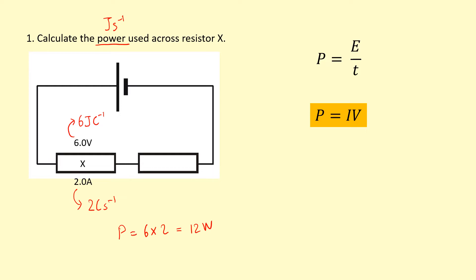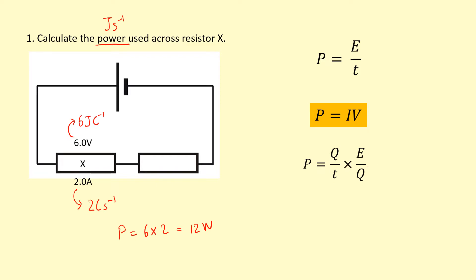Another way to think about it is: I've done the current times the potential difference, which is the energy per unit charge, and the charge cancels out to give me the power.